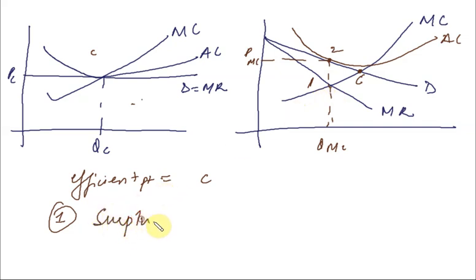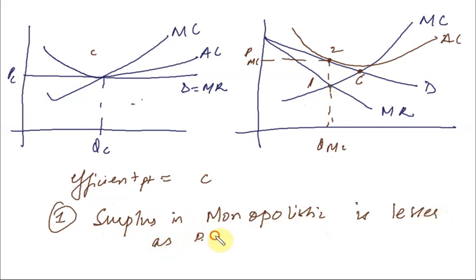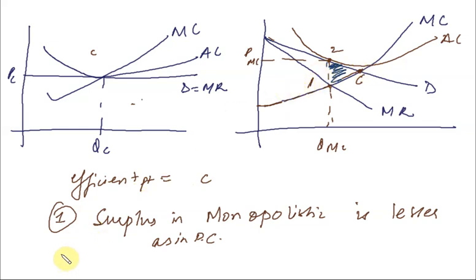The surplus in monopolistic competition is lesser compared to perfect competition. In perfect competition, surplus would have been the entire triangle. But in monopolistic competition, surplus is limited to a smaller area. The shaded region represents the surplus we could have gained but did not, because we are in monopolistic competition rather than perfect competition.